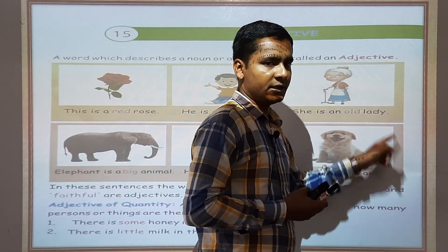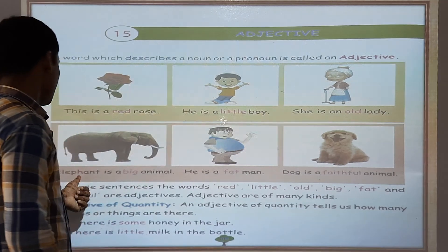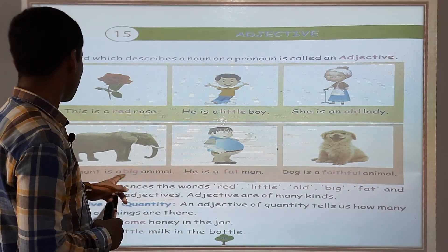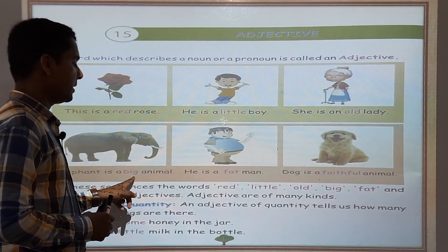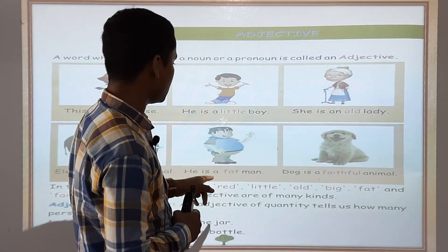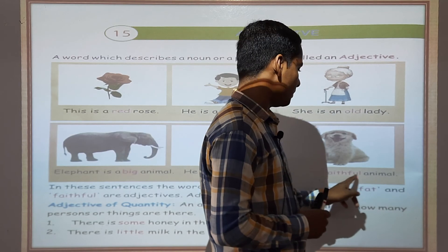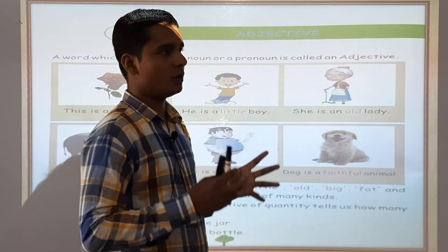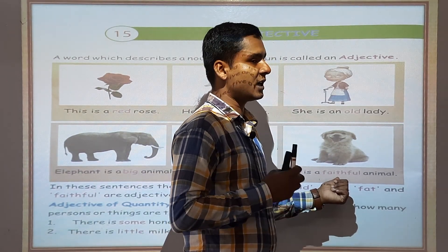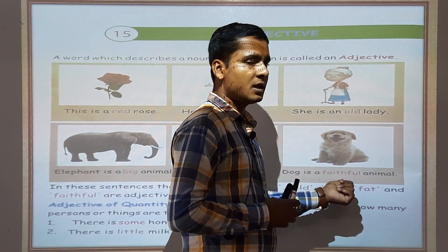She is an old lady. Hamaara old kya hai? Adjective hai. Elephant is a big animal — haathi ek bada jaanwar hota hai, then big hamaara kya hai? Adjective hai. He is a fat man — yahan noun ki visheshata bata raha hai, noun ko describe kar raha hai, fat word, isliye fat hamaara kya hai? Adjective hai. Dog is a faithful animal — yahan dog jo noun hai, usko faithful word describe kar raha hai, uski vyakhya kar raha hai, isliye faithful word kya hua? Ek Adjective hua.